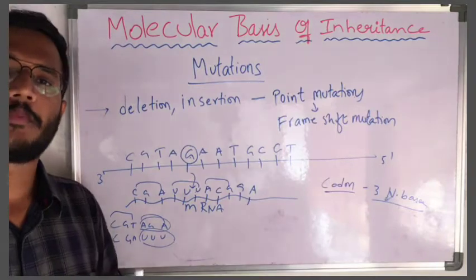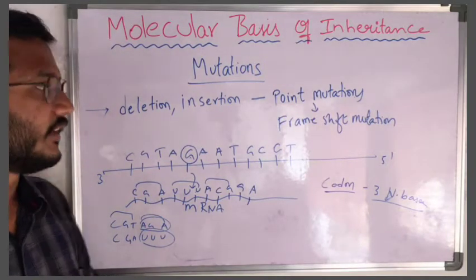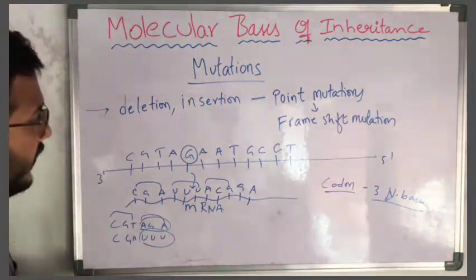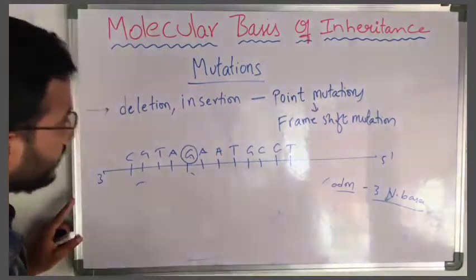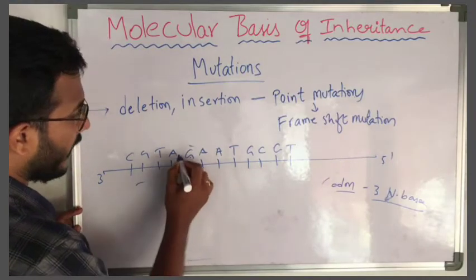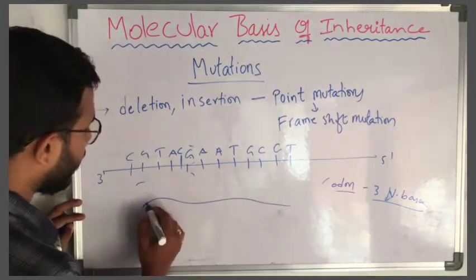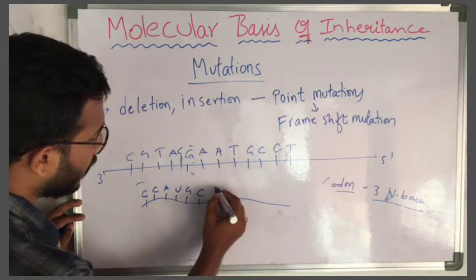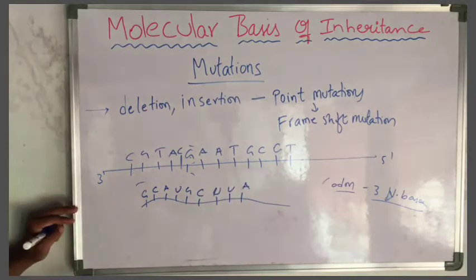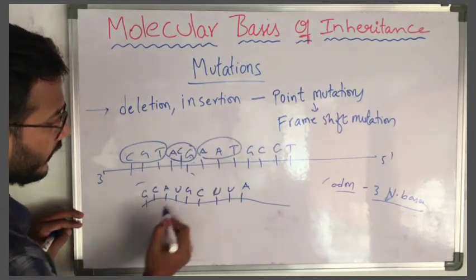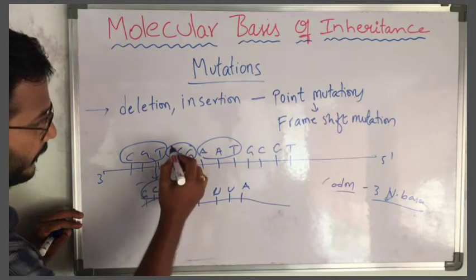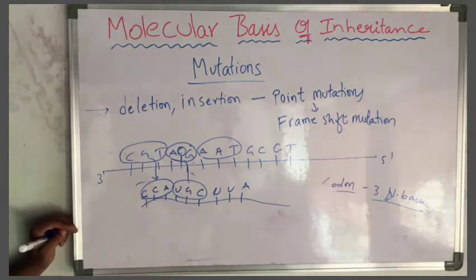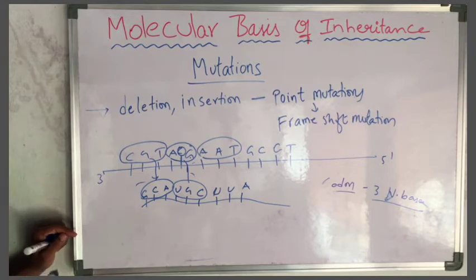This is why mutations play a very important role in the process of evolution — so many mutations have been taking place since 3.2 to 4.5 billion years. Now, for insertion: if in between two bases one new nitrogen base such as C is added, then in the mRNA again the sequence changes. At the point of insertion the entire codon sequence is shifted, producing a new codon and therefore a new amino acid, changing the protein structure.